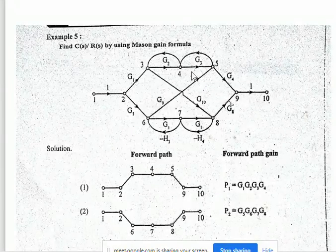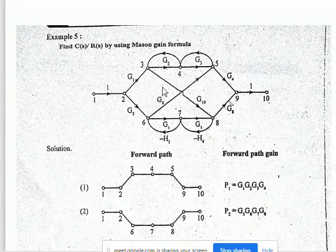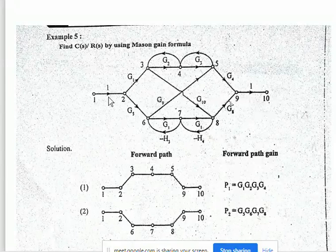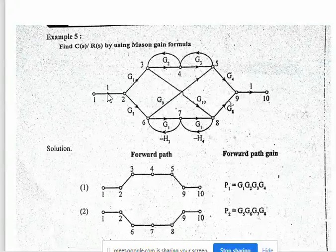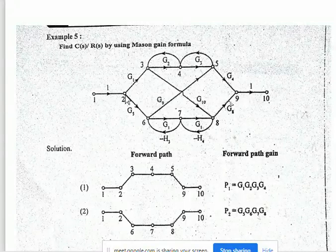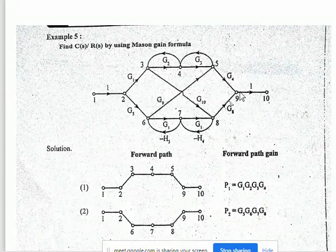We have been given one signal flow graph. First, in this graph we have to see the direction of signal flowing. The arrow markings show us the direction of signal flow. From node 1 to 2, 2 to 3, 3 to 4, 4 to 5, again 5 to 9, and 9 to 10. This is one way the signal is flowing.